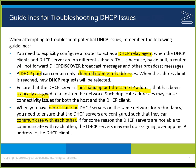To troubleshoot DHCP, remember the following guidelines: explicitly configure a router to act as the DHCP relay agent when DHCP clients and servers are on different subnets. The discover and request are both broadcast messages, so without a relay agent, we can't even start the process. There's also a limited number of addresses — when the address limit is reached, new requests will be rejected.